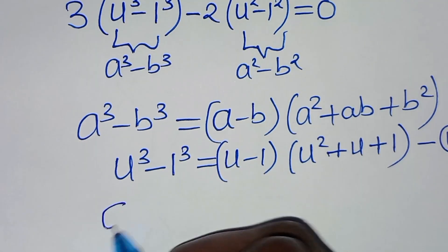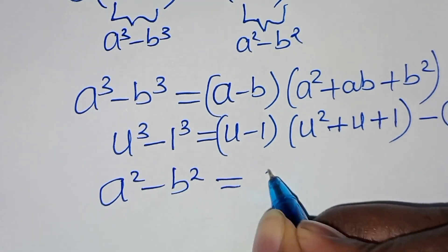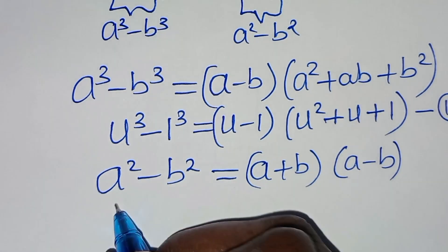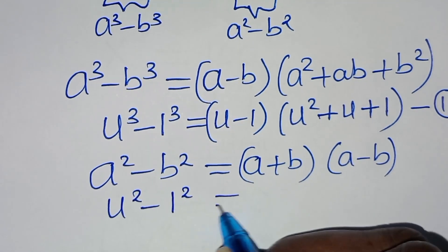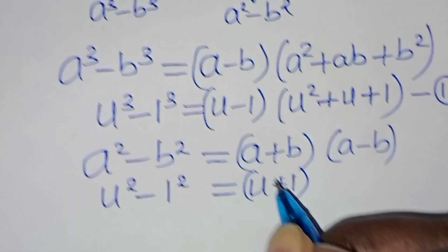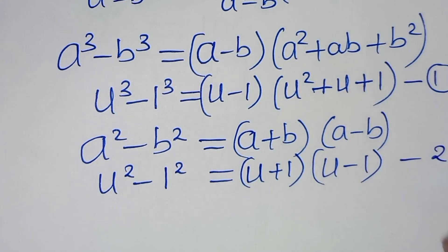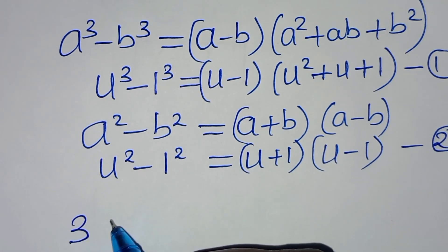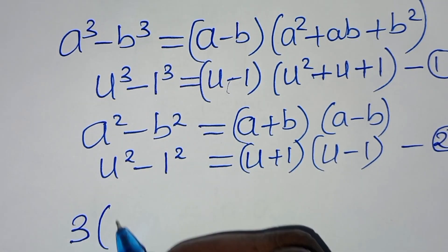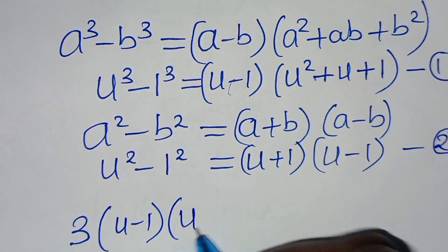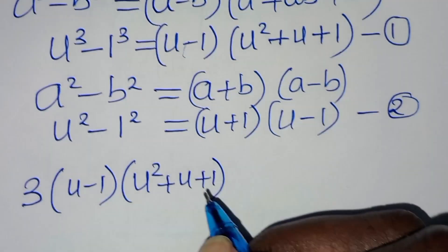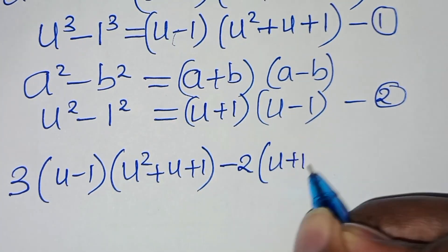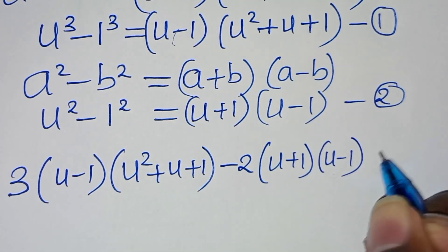The second part is in the form of a² minus b², which we can express as (a plus b)(a minus b). So u² minus 1² is the same thing as (u plus 1)(u minus 1). Let's call this equation 2. Combining equations 1 and 2, we have 3(u minus 1)(u² plus u plus 1) minus 2(u plus 1)(u minus 1) equals 0.